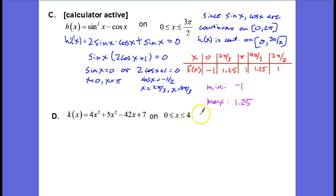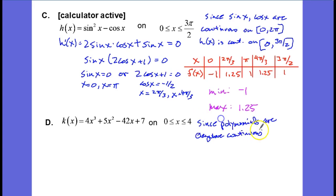So we can immediately make the argument that since polynomials are everywhere continuous, it follows that k of x is continuous on the closed interval from 0 to 4. And so we can apply the extreme value theorem, and we will do just that.